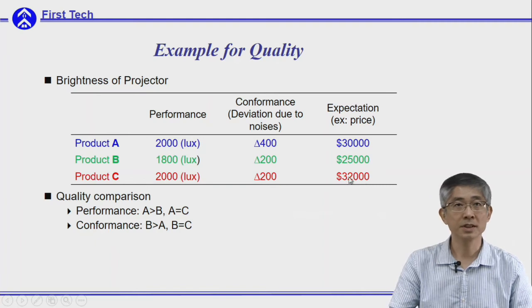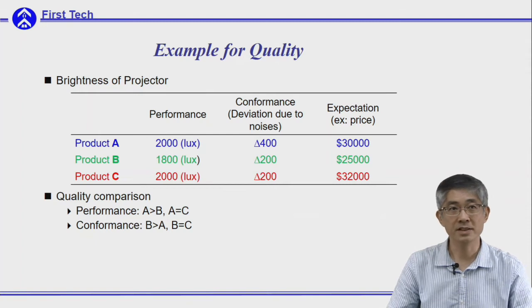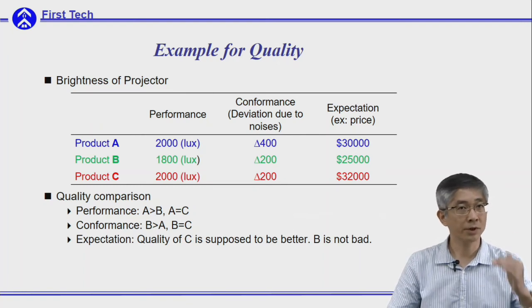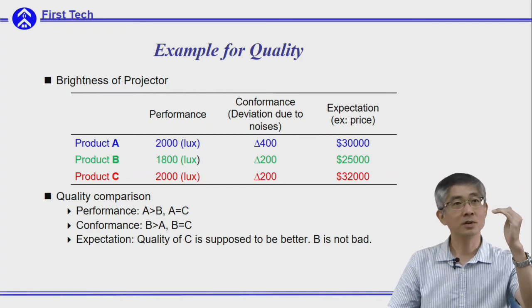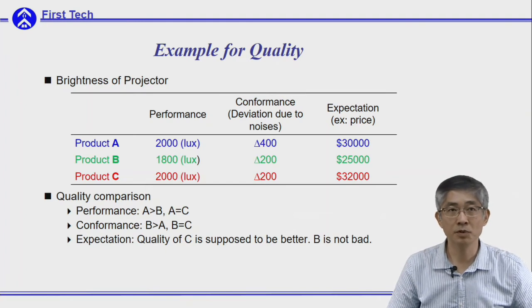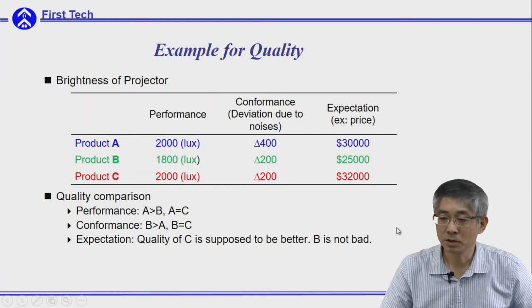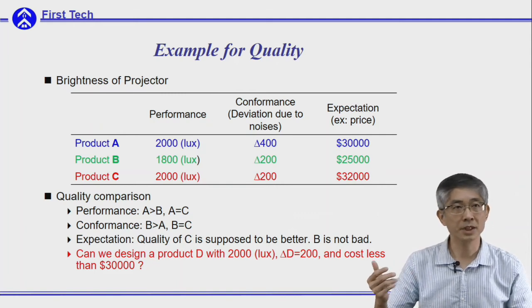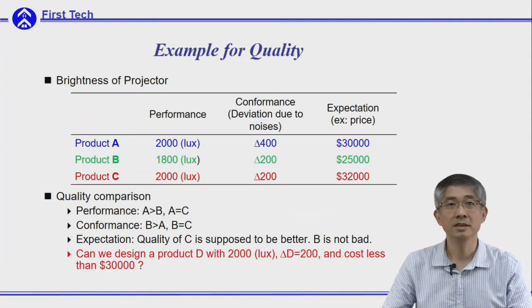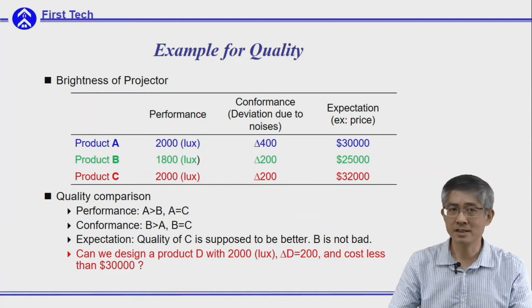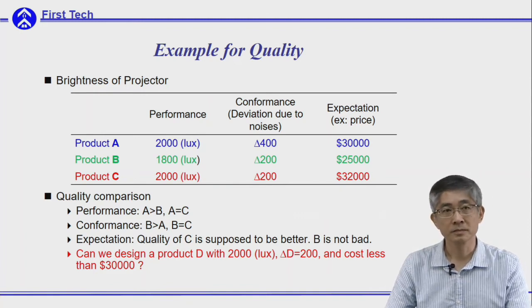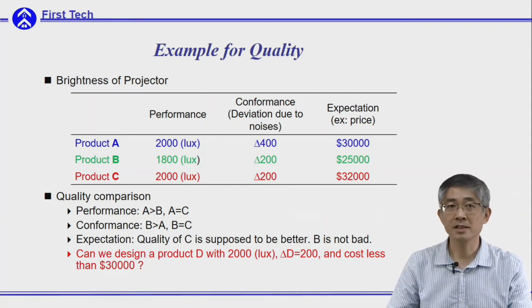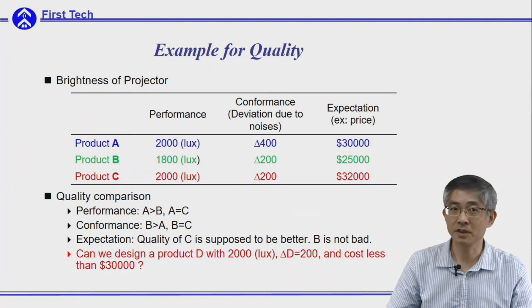But what if I told you this is the price of the projector? Product C is more expensive than product A, which is more expensive than B. The customer's expectation for quality will raise related to the cost. Therefore, product C is supposed to deliver better performance and better conformance. When you consider both price and performance, product C is not 100% the best choice. Product B is not that bad — since it's cheaper, although brightness is not as good, it has pretty good conformance. Now the challenge is: can we design a product D which has the best performance, best conformance, and lower cost?